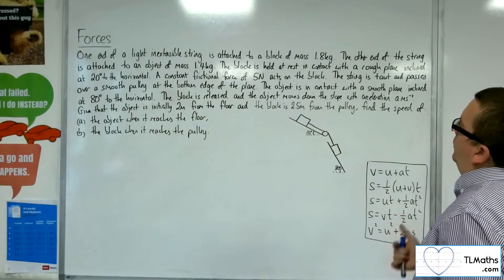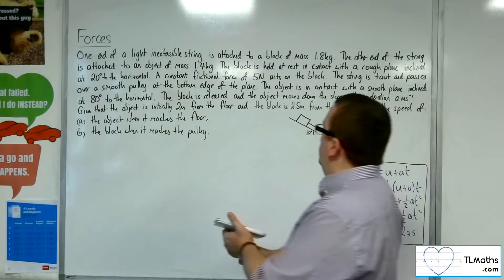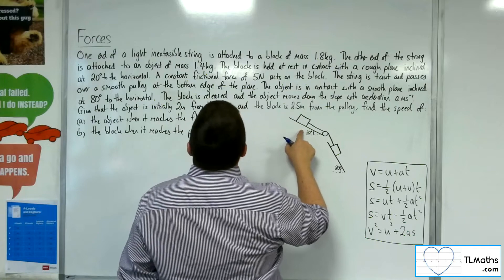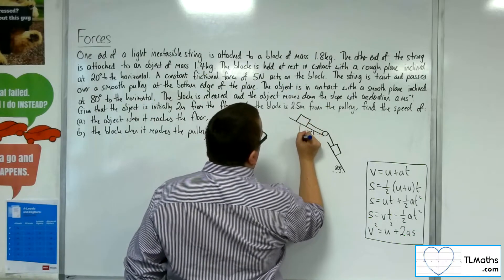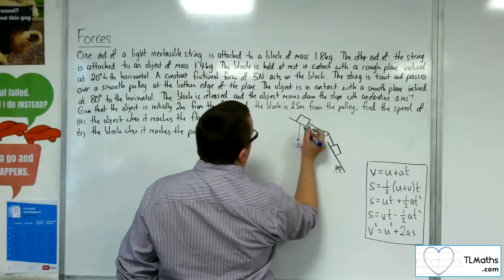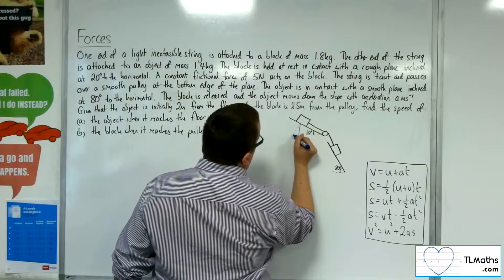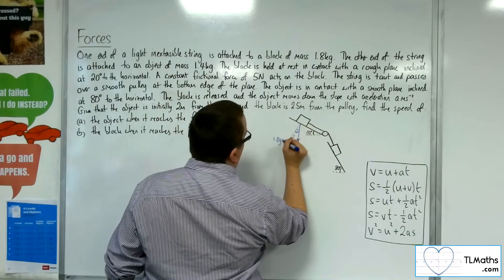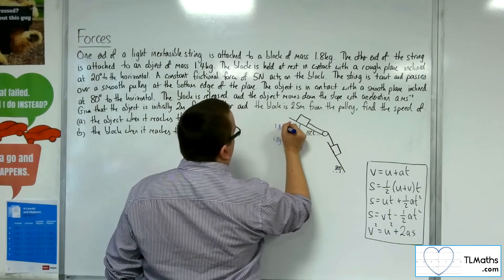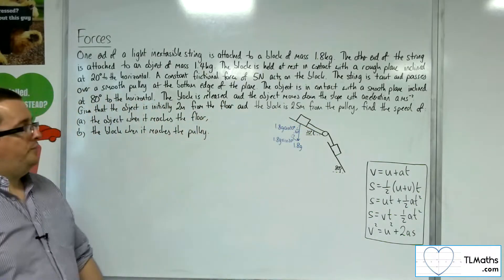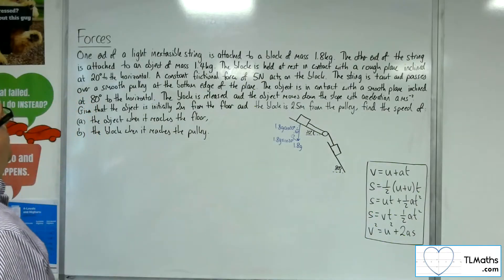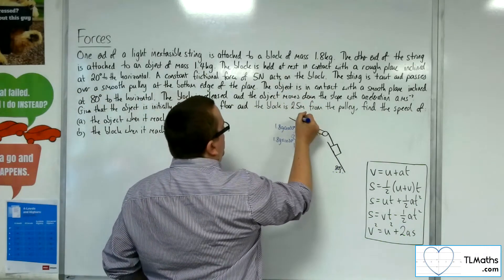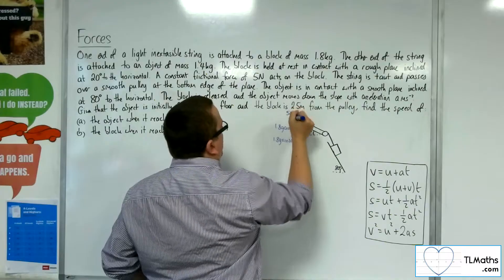The block is held at rest in contact with a rough plane inclined at 20 degrees to the horizontal. This is the block with mass of 1.8 kilos. Let's put the weight in, 1.8g. Dividing it into component parts, we have 1.8g sine 20 degrees and 1.8g cosine 20 degrees. That surface is rough with a constant frictional force of 5 newtons acting against the direction of motion.